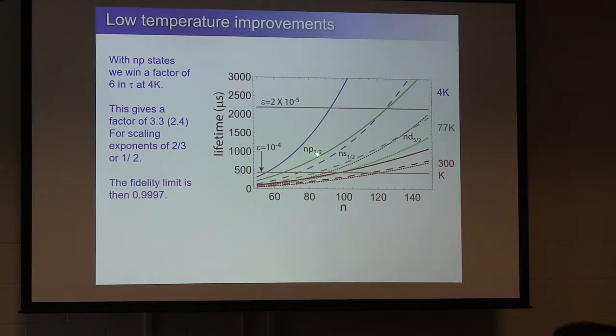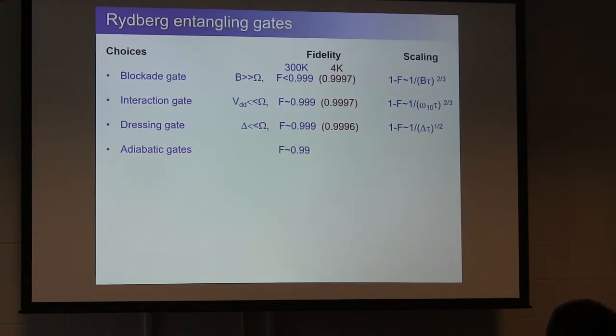So you can improve all of these by going to low temperature. So here's a plot of the lifetimes of low angular momentum states. The P states are in solid lines. The S states are dashed, and the D states are dotted. And then the color codes the temperature. And so if I take P states, which have the longest lifetimes, around n equals 100, that's this red solid curve, I have about 500 microseconds. And if I go to 77 kelvin, I do a few times better. If I go to 4 kelvin, for the P states, I pick up about a factor of 6. If I go to 0 kelvin, it doesn't make it any better. So you can win about a factor of 6 going to lower temperatures. And that means, if your scaling exponent is minus two-thirds, you pick up a factor of 3.3 in the fidelity, or if it's a half, you pick up a factor of 2.4. So that pushes those numbers up a bit higher. And so here, these are the 300 kelvin fidelities and those are the 4 kelvin fidelities.